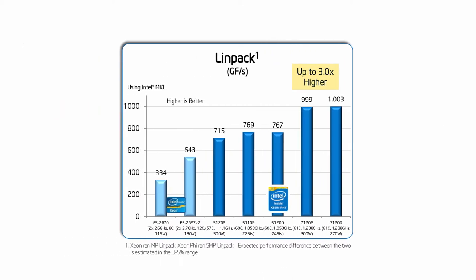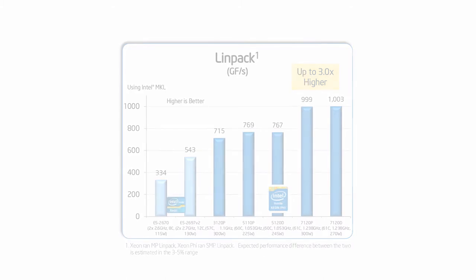The graph shows us that Xeon Phi performs three times faster than two Intel Sandy Bridge processors, and two times faster than two Intel Ivy Bridge processors. Next, let's compare those two architectures side by side in further detail.